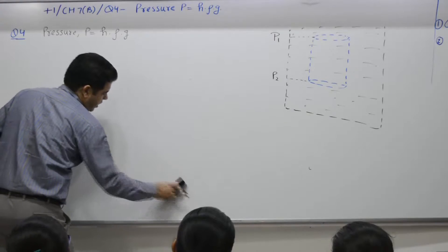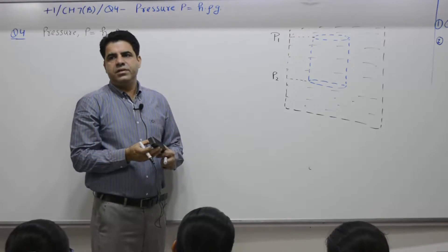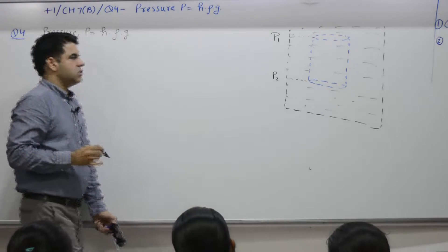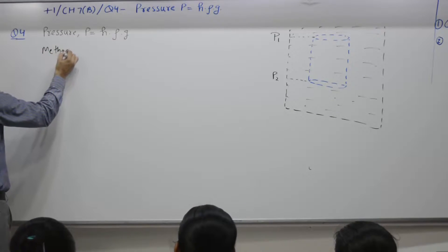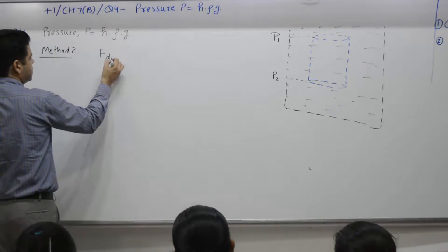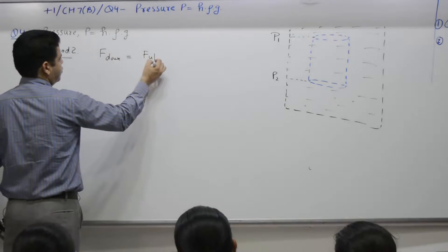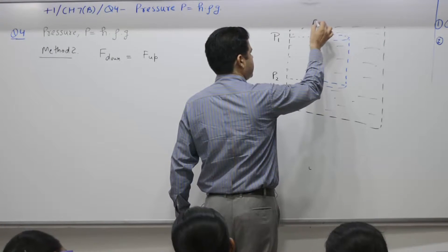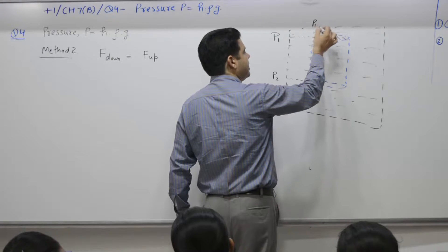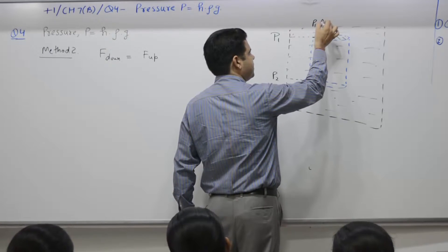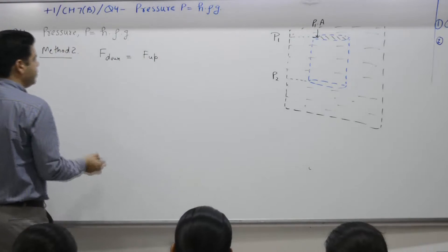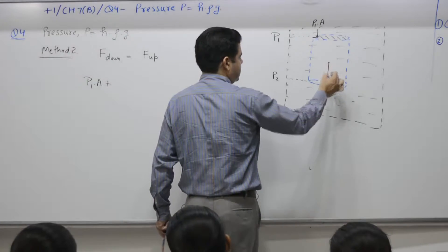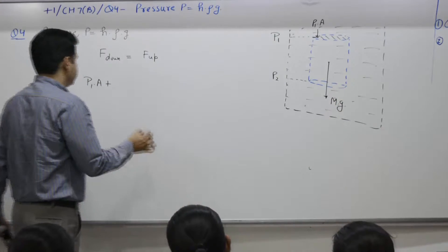But this cylinder, hypothetical cylinder is suspended, means remains wherever it is. Means what? Net downward force is equal to net upward force. So for method 2, downward force is equal to upward force. Downward force, pressure this part is P1. That is why this pressure, pressure is always normal to the surface. P1 is acting at this surface. So pressure is P1 and force acting downward is P1 into A. P1 into A is downward force, plus weight of the cylinder, Mg, is also downwards.